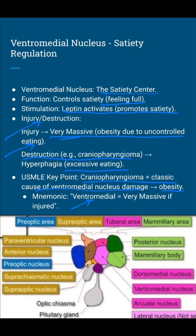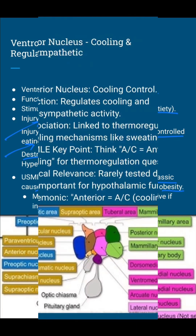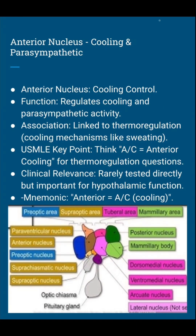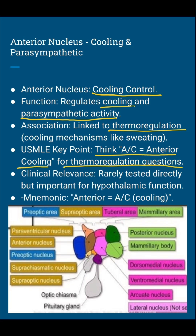The mnemonic here is ventromedial equals very massive if injured — keep that in mind for your exam. Finally, the anterior nucleus is all about cooling and parasympathetic activity. It regulates cooling mechanisms like sweating to lower body temperature and is tied to parasympathetic functions. The high-yield mnemonic is A equals cooling: anterior equals cooling. You might see a question about hypothalamic control of temperature.